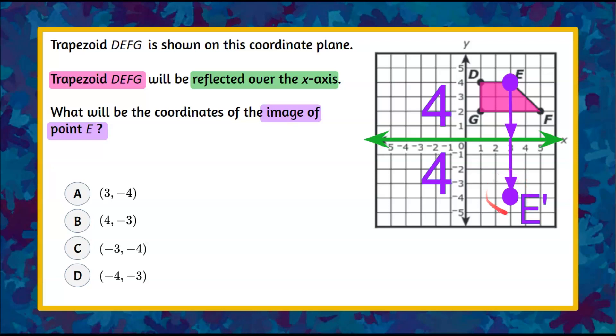So now we need to identify this ordered pair. We can see that to plot that point, you would go 3 to the right and then 4 units down. So 3, negative 4 is the ordered pair or coordinates of the image E prime of the vertex E from the trapezoid.